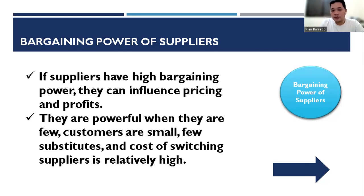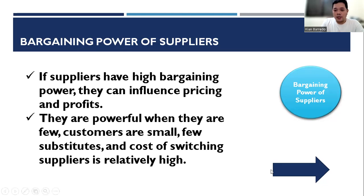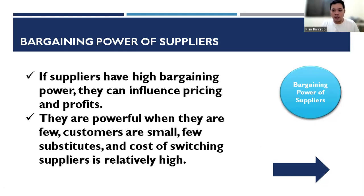If suppliers have high bargaining power and want to increase their cost, we have nothing to do about it — it will affect our cost of goods sold and our profit. If we switch to other suppliers, for instance, the main supply of petroleum products is from the Middle East, and suppliers from other countries still source from there at higher prices, so switching is not practical.